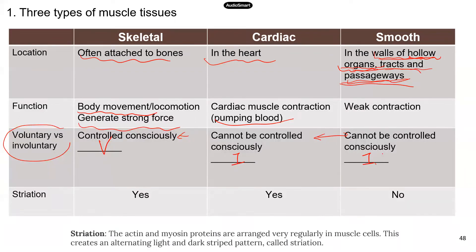The TEAS manual also mentions striation. I think it's a minor fact, because the only thing they can really ask is which muscle has striation and which one doesn't. As long as you remember that, you can handle the question. Skeletal muscles and cardiac muscles generate strong force, so they have striations, while smooth muscle does not.